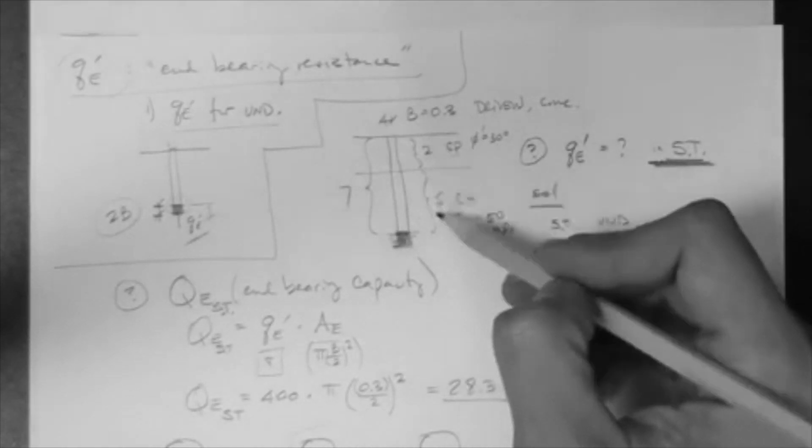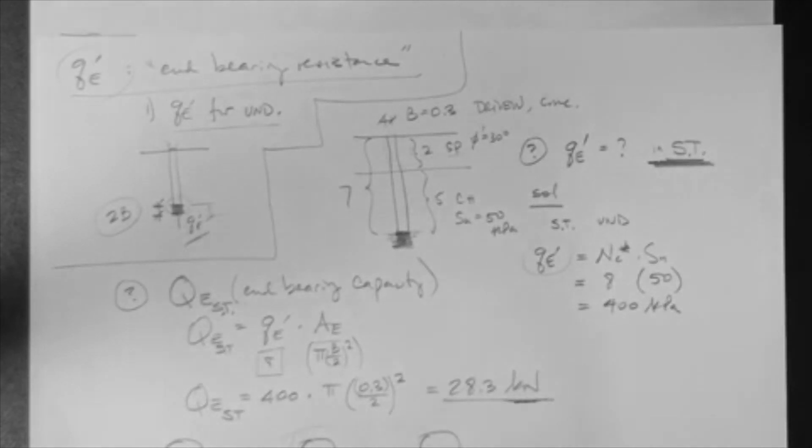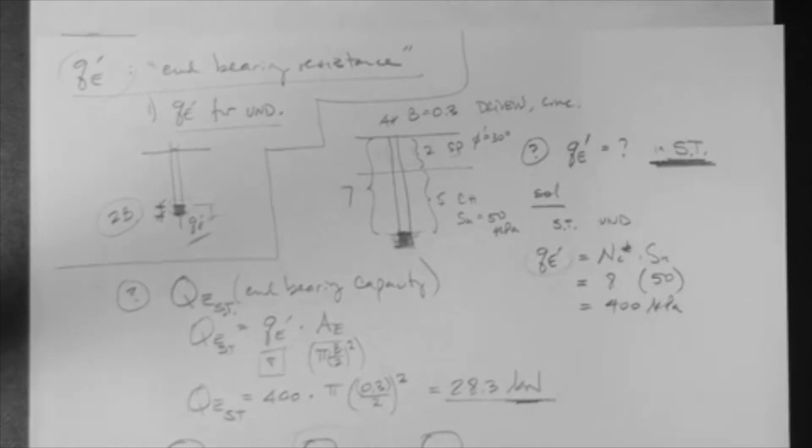But now, considering the different layer thicknesses, segment thicknesses, or segment lengths. And then you would add to that capacity the end-bearing capacity, which is 28.3. This is the capacity of the pile in the short term. Simply the summation of the side friction capacity and the end-bearing capacity.